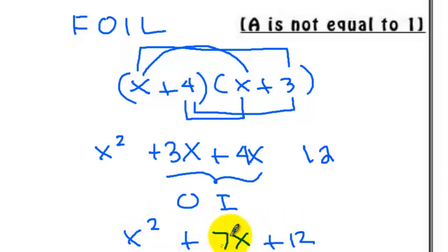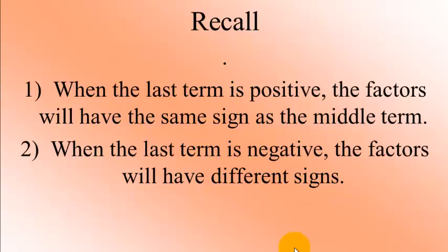It's very important to see that the 7x is actually the sum of the product of the outer terms and the inner terms. We also need to remember the procedure on how to select factors. When the last term is positive, the factors will have the same sign as the middle term. When the last term is negative, the factors will have different signs.